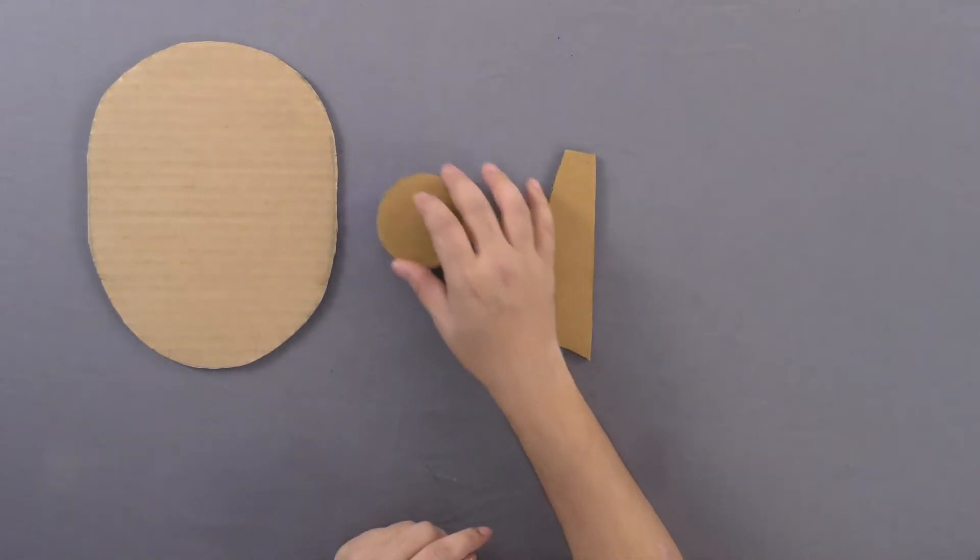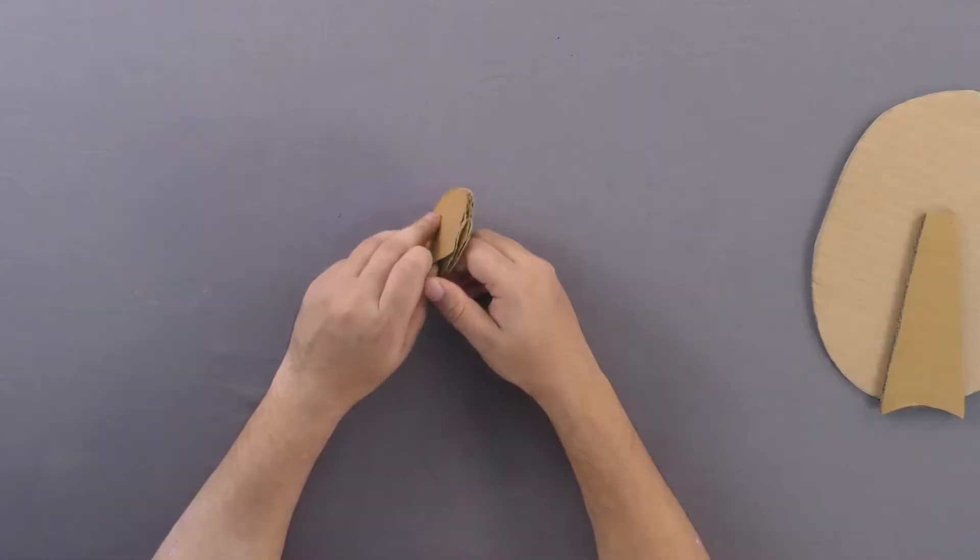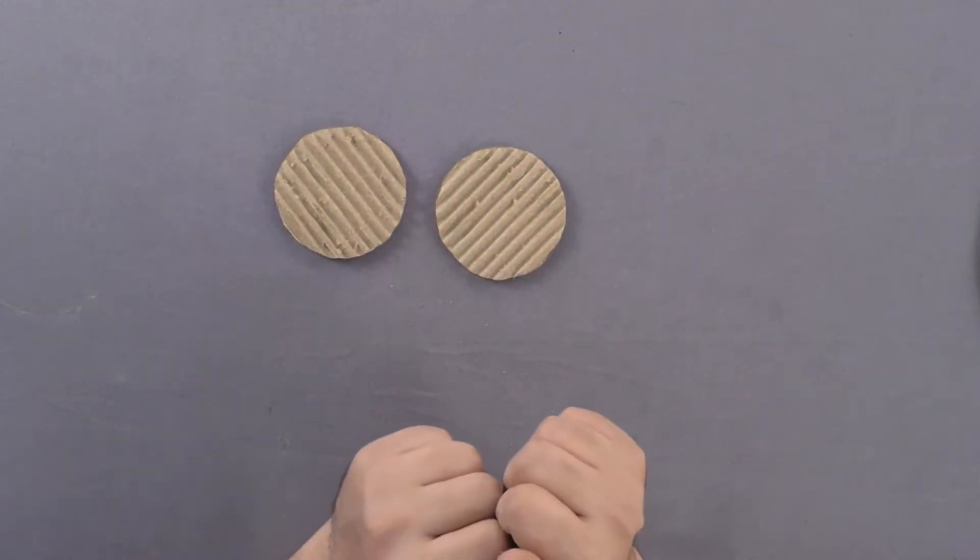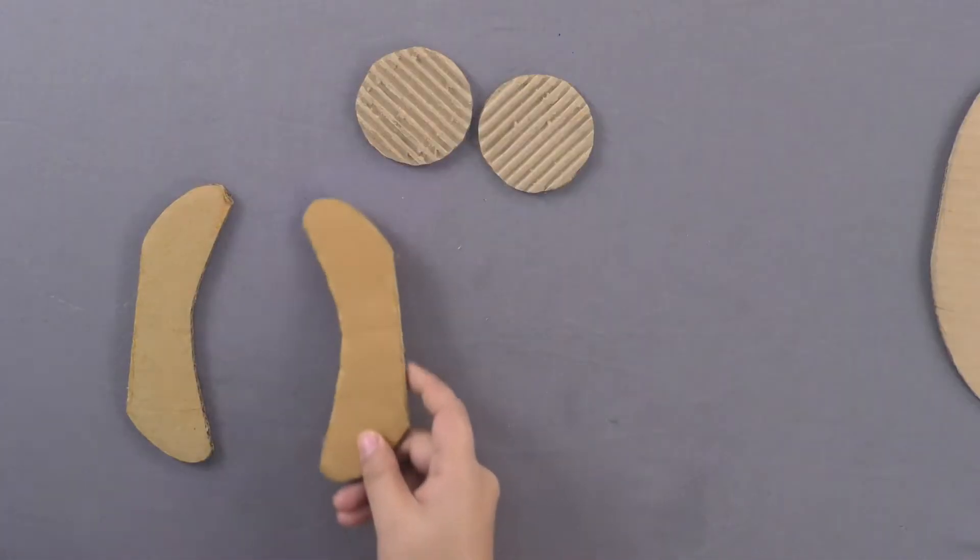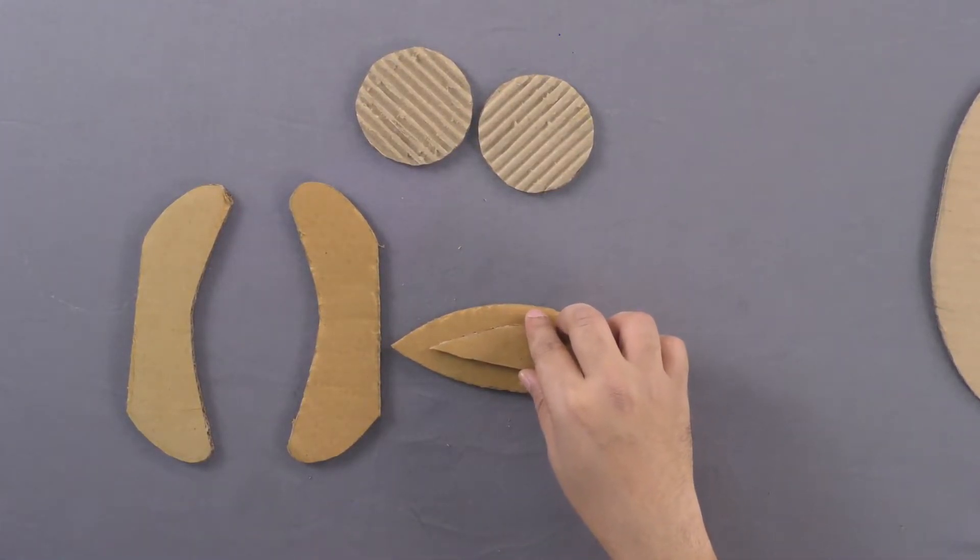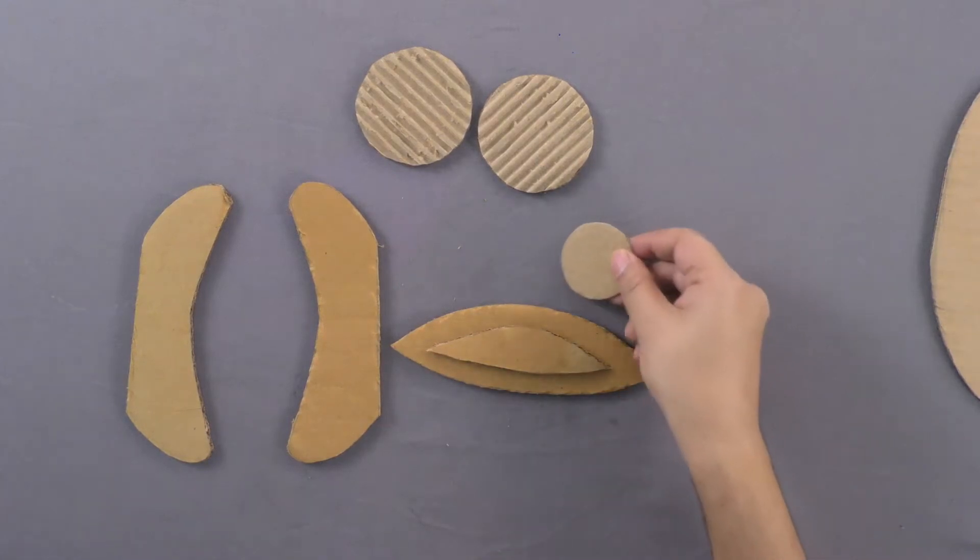Next, cut out a circle to make the eyes. Split it into two parts to expose the corrugated surface upwards. Similarly, cut triangles, spindles, long and short curved pieces to make different parts of the mask.